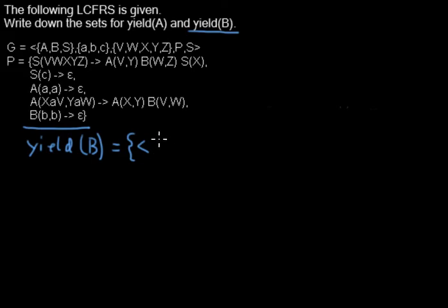And I write it down like this. It's like a tuple. And at the first position there's a B and at the second also. And then we are done for B.